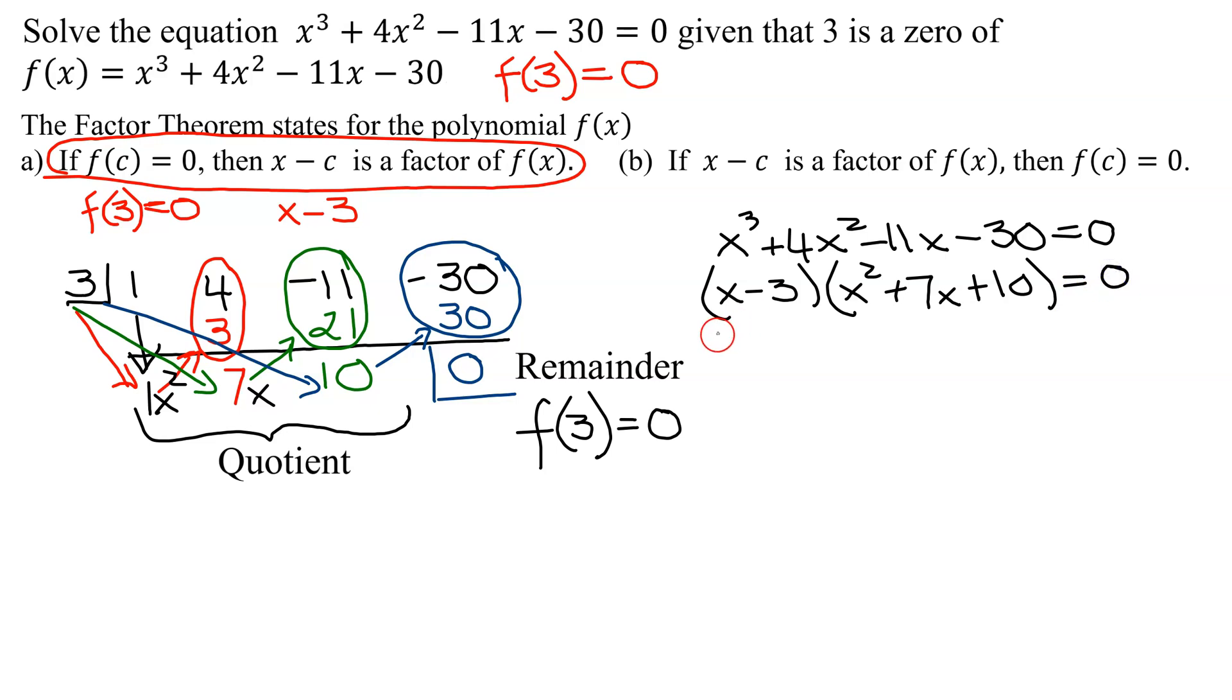So now all I have to do is factor this trinomial here. It's a simple one because the leading coefficient of the x² is 1. So let's do it quickly by trial and error. To get x², I have x and x.